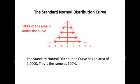In other words, to put it simply, one half of the area is to the right, one half of the area is to the left. So we might say 100% of the data lie beneath the curve. The standard normal distribution curve has an area of 1.0000.